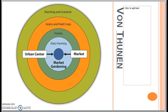Overall, the Von Thunen model emphasizes the influence of distance as a factor in human location decisions. Geographers analyze farming land uses in particular areas and compare them to Von Thunen's hypothetical situation in order to explain what they observe and predict future land use patterns.